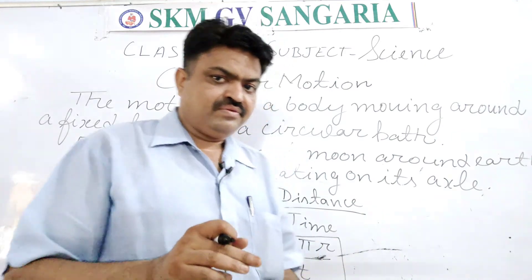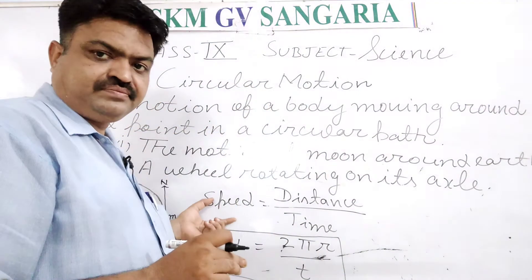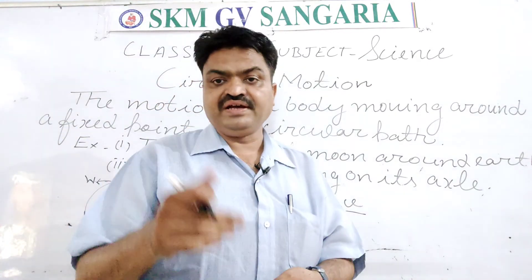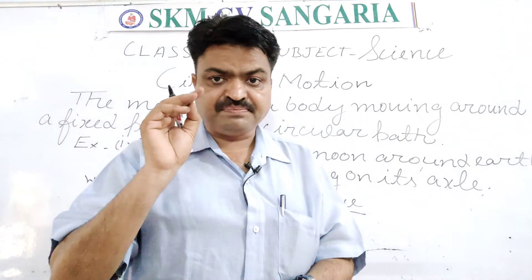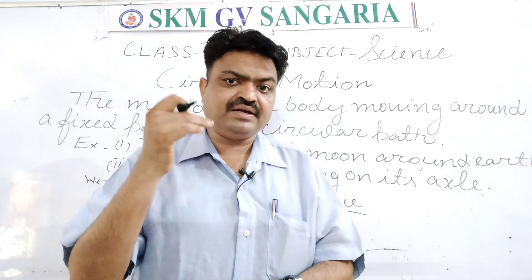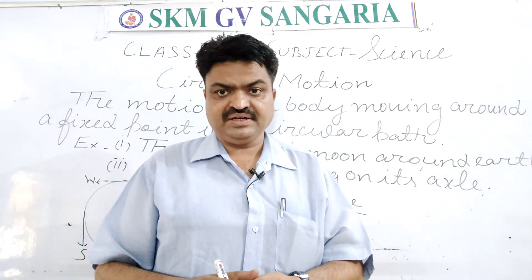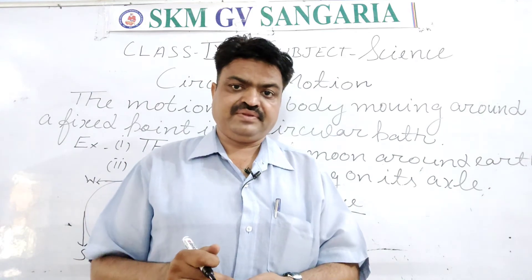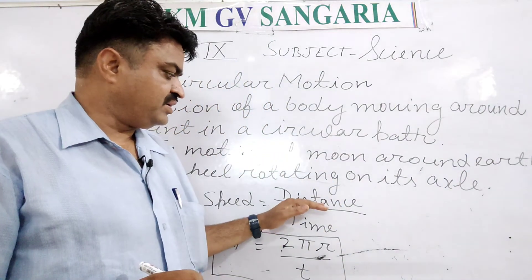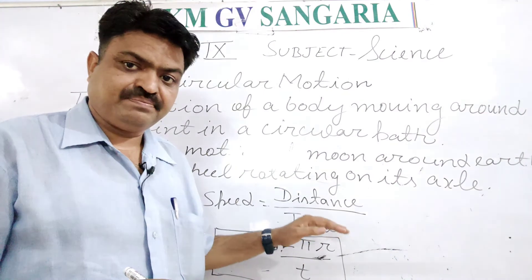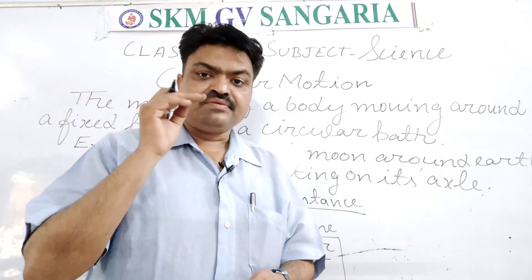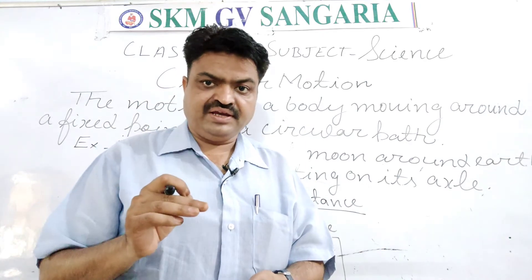Now, the speed in circular motion — how do we get it? What is speed? Speed is a scalar quantity — it is the scalar quantity in which an object covers distance per unit time, meaning the distance per unit time covered by an object.